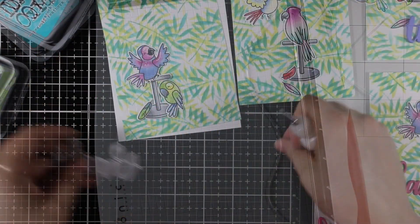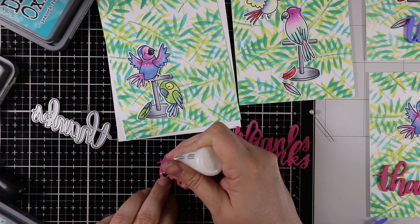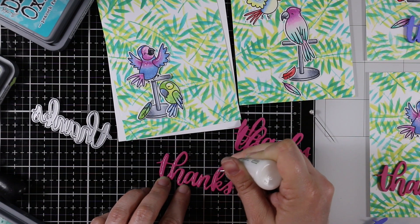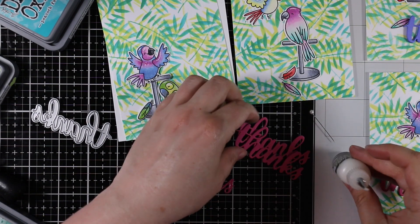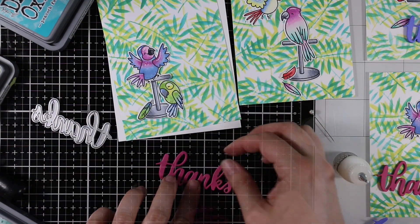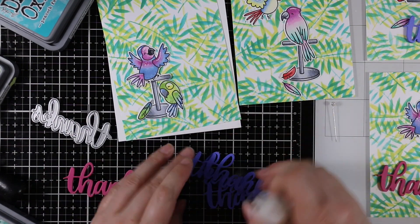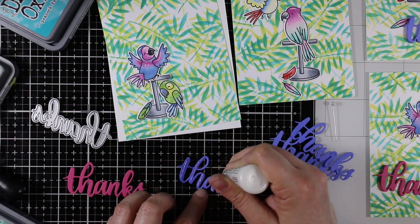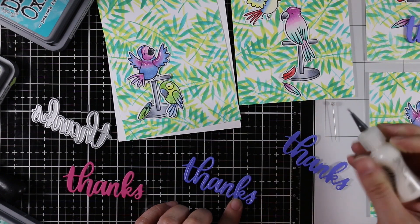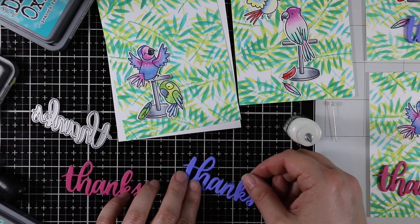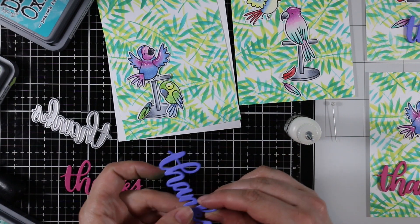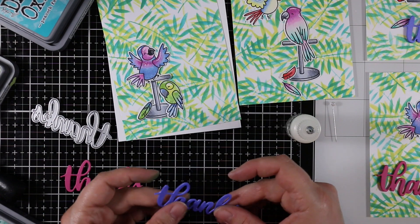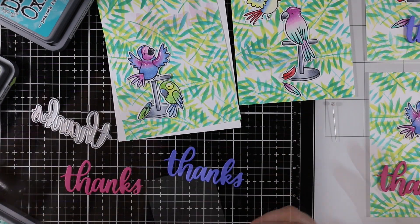The sentiments were die cuts from the new Heffy Doodle Thanks wafer die. I had die cut some doll pink cardstock as well as some Gina K Wild Wisteria cardstock and I die cut them multiple times and then stacked them together so that each one is three layers stacked. I'm just using my multi-medium matte adhesive. These didn't take very long at all to stack together.